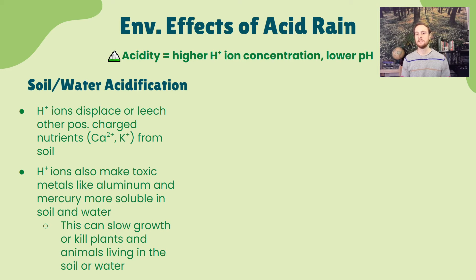H+ ions can displace positively charged soil nutrients from negatively charged clay particles that hold them. The other problem is that H+ ions make toxic metals like aluminum more soluble — bumping aluminum off binding sites and putting it into the soil at concentrations toxic to plants. This can also occur in aquatic ecosystems where aluminum is toxic to organisms. Not only can plants lose important soil nutrients through leaching, but they can be exposed to toxic substances such as aluminum.